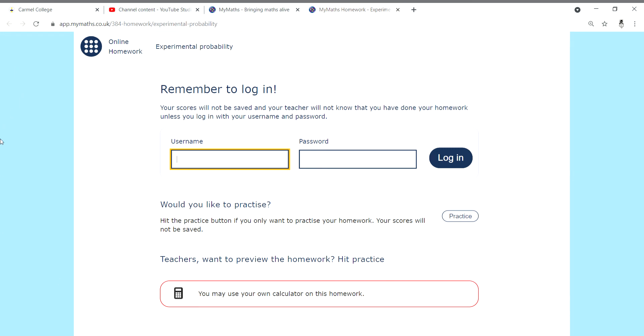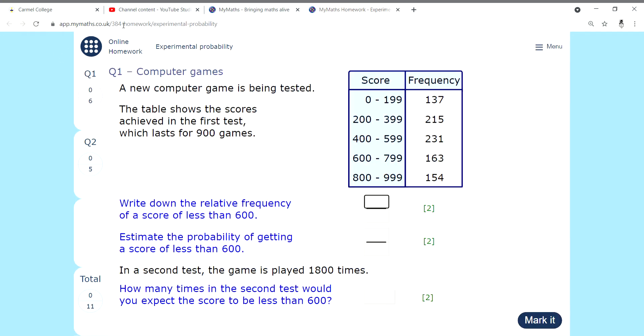Hi, this is the MyMaths Walkthrough for Experimental Probability number 384. Let's go to this page.